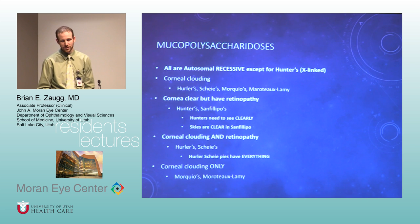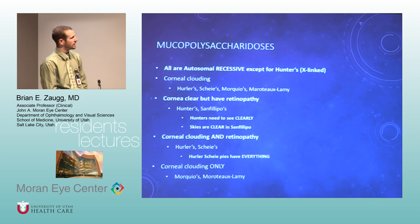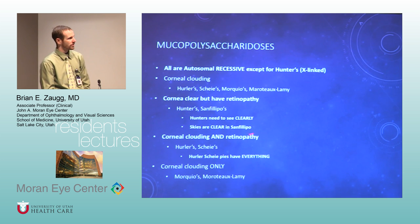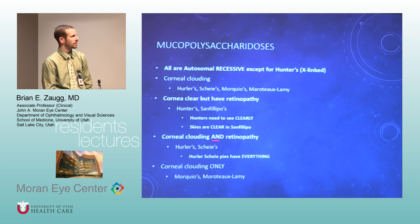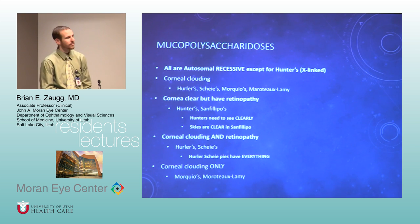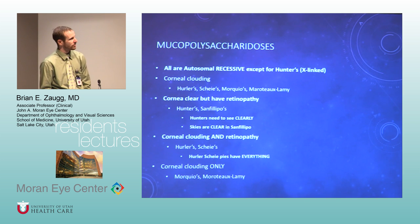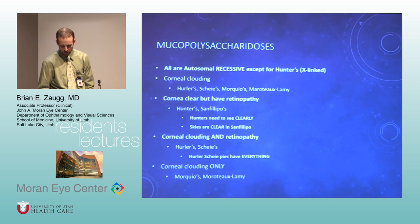Mucopolysaccharidoses — they keep testing on these even though they're rare. The key to remember: the cornea is clear in Hunter's syndrome, and the eyes are clear in Sanfilippo. The rest can have corneal clouding. If you can memorize those two with clear corneas, that's usually all you need. Hunter's is X-linked — hunters like to shoot the X.